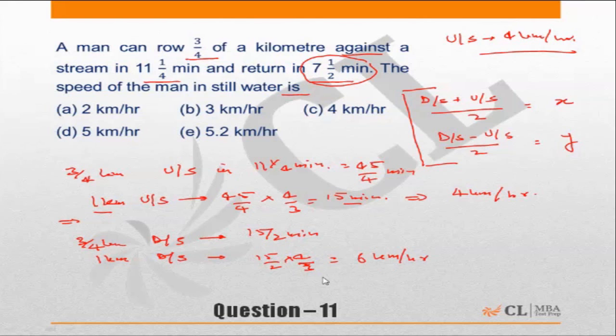Now some of you may be confused, so let me just do the calculation for you. This is nothing but 15/2 times 4/3, which equals 10 minutes. So 1 kilometer downstream is covered in 10 minutes, that means in 60 minutes downstream you will cover 6 kilometers, so 6 kilometers per hour.